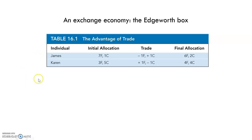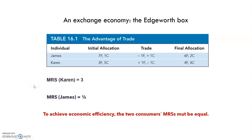The marginal rate of substitution for Karen is equal to three, and the marginal rate of substitution for James is one half. Suppose that James and Karen have ten units of food and six units of clothing between them. Initially, James has seven units of food and one unit of clothing, and Karen has three units of food and five units of clothing — totaling ten units of food and six units of clothing in the economy.